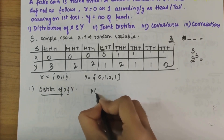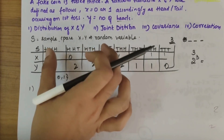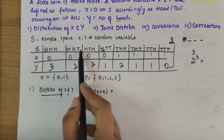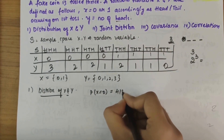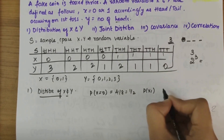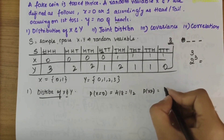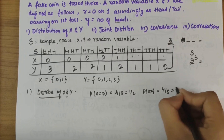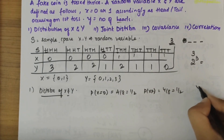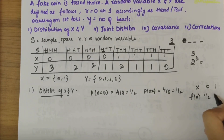Let's write the distribution of X. When X equals 0, there are 4 outcomes, so P(X=0) equals 4/8 equals 1/2. When X equals 1, there are also 4 outcomes, so P(X=1) equals 4/8 equals 1/2. So the distribution of X gives f(0) equals 1/2 and f(1) equals 1/2.